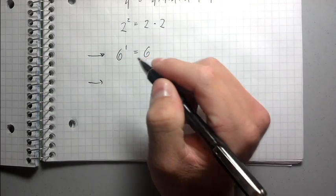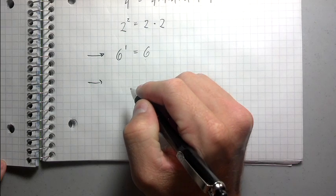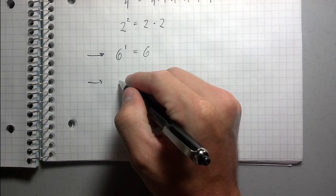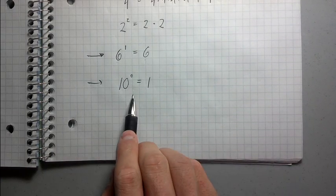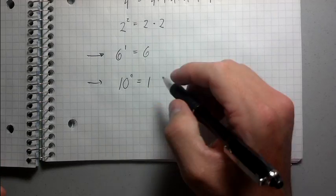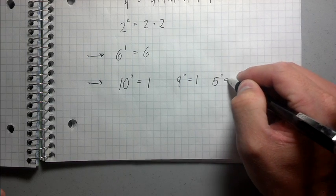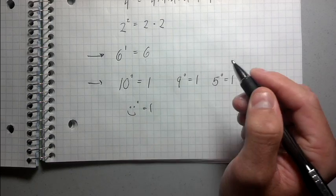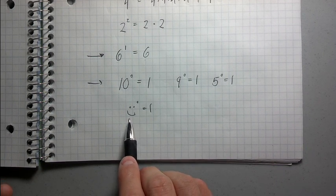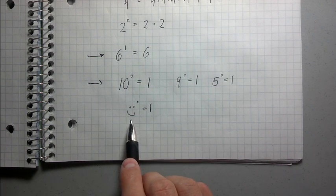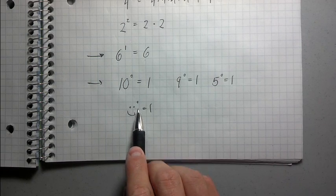The second special case that warrants further explanation is when you take something to the zero power. What does it mean to multiply something by itself zero times? Well, 10 to the zero power equals 1. Anything to the zero power is 1. 10 to the zero is 1, 9 to the zero is 1, 5 to the zero is 1. It doesn't matter what it is — as long as you have a non-zero number, whether it's a fraction, a variable, or whatever, if you take it to the zero power, it's 1. The one exception is zero to the zero power, but that's a different story.